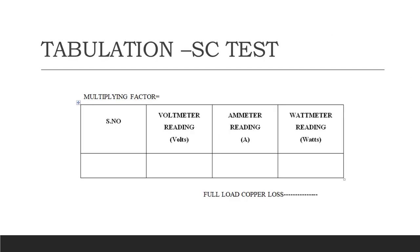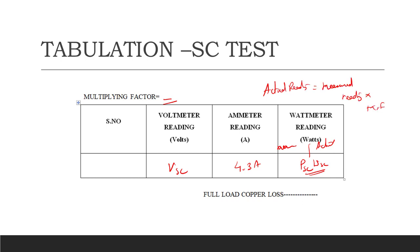This is the tabulation for the short circuit test. Set the rated current of 4.3 amps, then find VSC (short circuit voltage) and WSC (short circuit power). The actual reading is the measured reading multiplied by the multiplication factor. Whatever you get as the actual reading will be the full load copper losses. From the copper loss WCU and core loss WC, we are going to find out the efficiency and regulation.